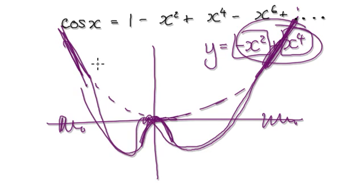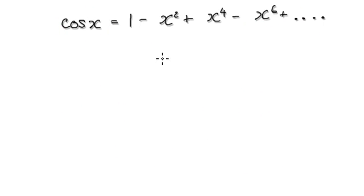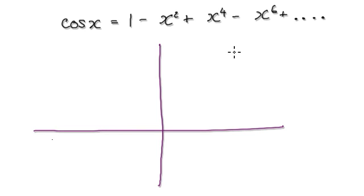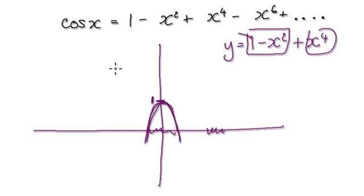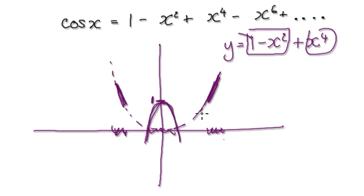Your graph would look something like this. To create the cos graph, consider y equals 1 minus x squared plus x to the power 4. When x is small, it wants to do an intercept of 1 and then a negative quadratic. When x is big, it wants to do x to the power 4. Combining the two would give you something like this.